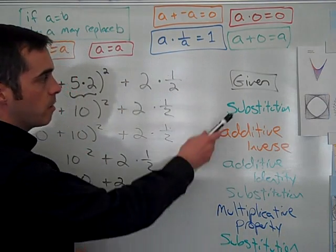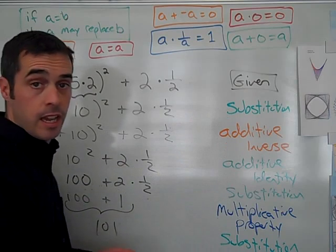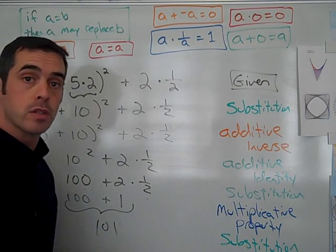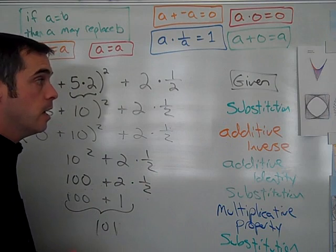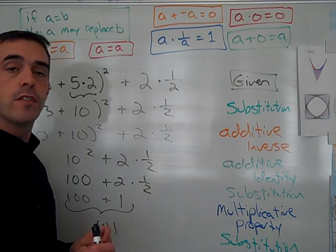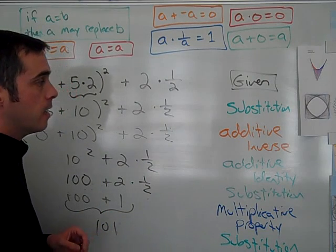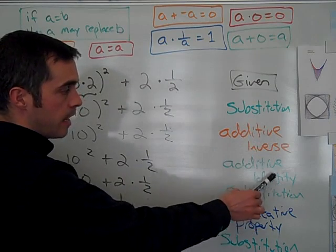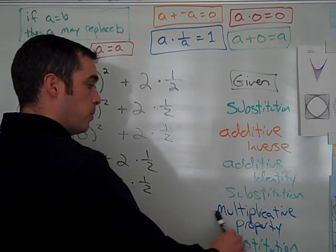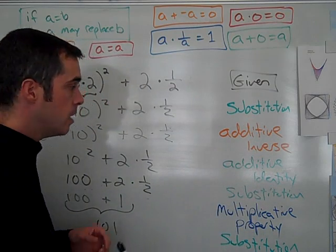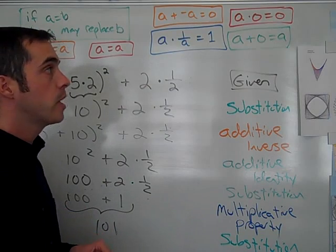So as you can see, substitution appeared three times. It is quite useful. It does get used a lot. But it's not always the most specific answer that we can give. And if something like the additive inverse, the additive identity, or the multiplicative identity property is being used, then we should use that proper name for it.